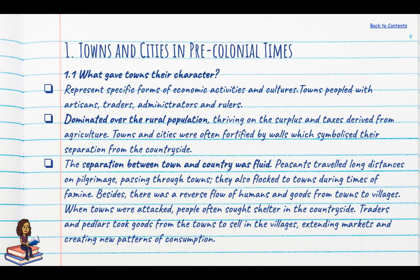Before we study these three presidency towns, let's look at what towns and cities were like before the British East India Company arrived in India. Pre-colonial cities were generally centres of economic activity or culture — they could be capital cities, temple towns, or weaving centres. Most cities dominated over the rural population by extracting surplus from rural areas in the form of taxes.